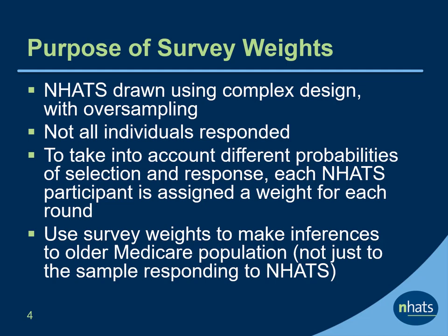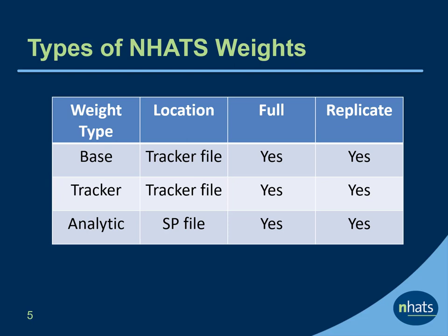Let's take a look at the different types of weights provided. Three types of weights have been produced for each cohort of sample persons in each round: first, base weights; second, tracker weights; third, analytic weights. The base weights and the tracker weights are located on the tracker file, and the analytic weights are on the sample person file. For each type of weight, users have a full sample weight and a set of replicate weights.